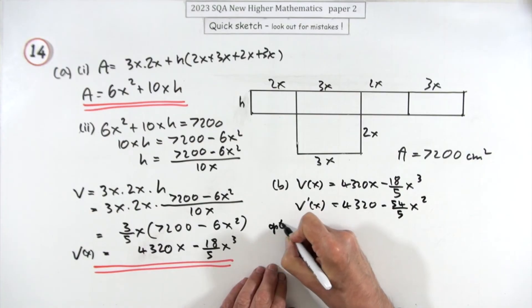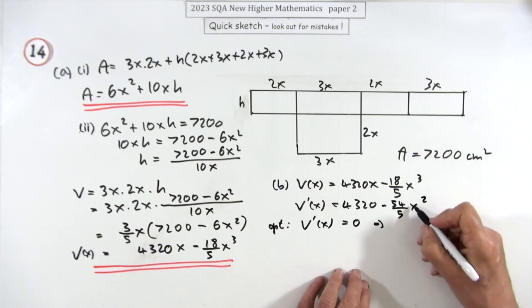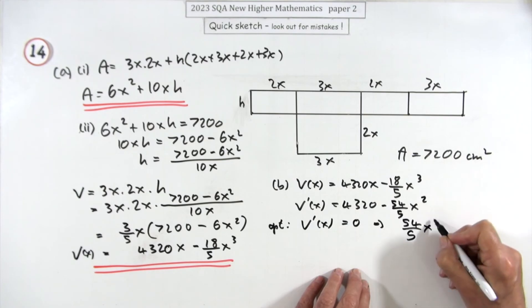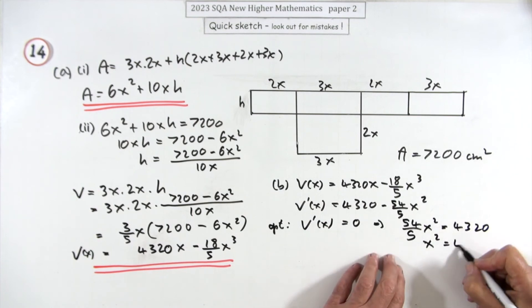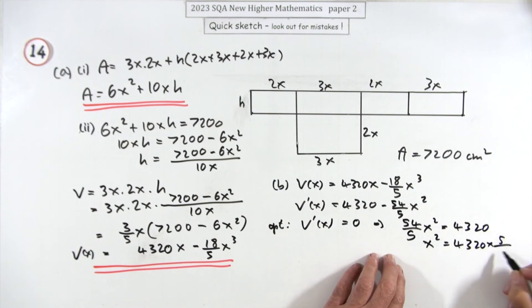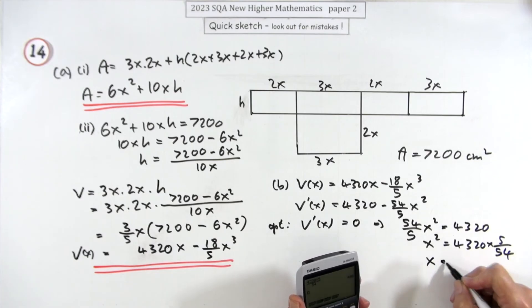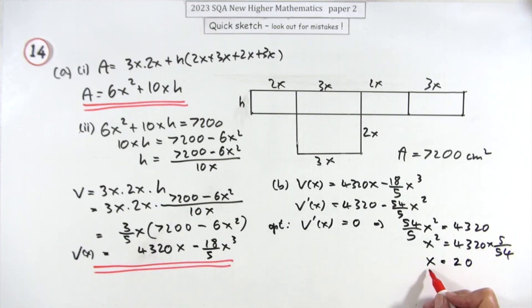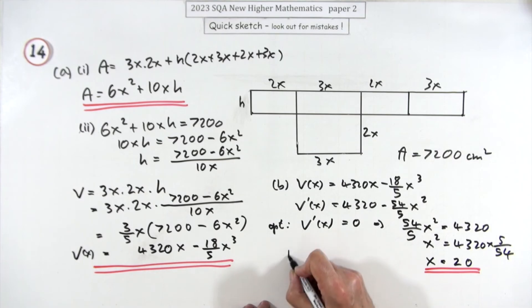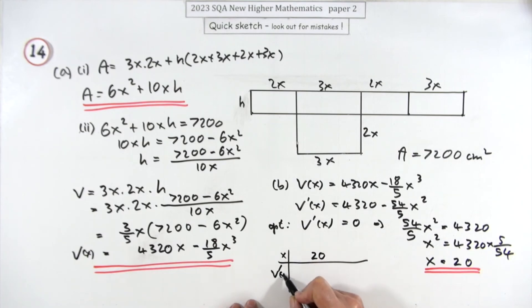It optimizes when V'(x) = 0, so (54/5)x² = 432, meaning x² = 432 × 5/54 = 400. That gives x = 20, which works out very nicely. Now we need a sign table to demonstrate this is actually a maximum.